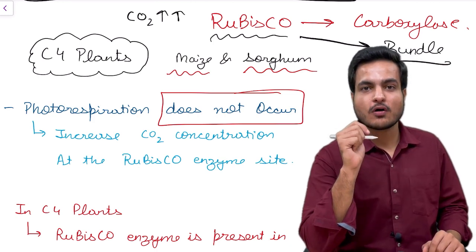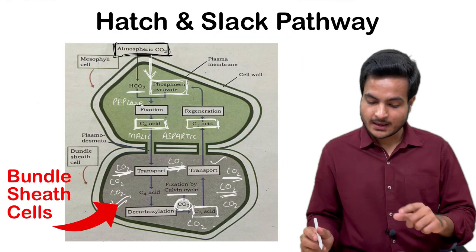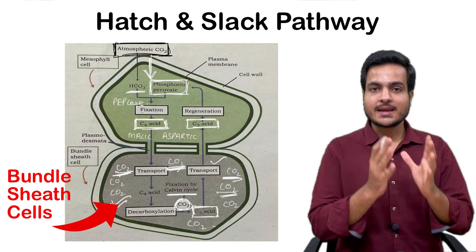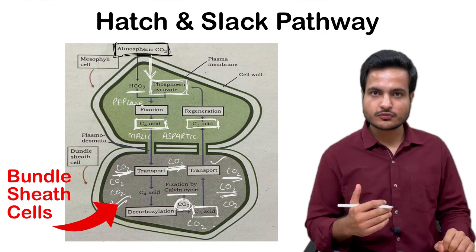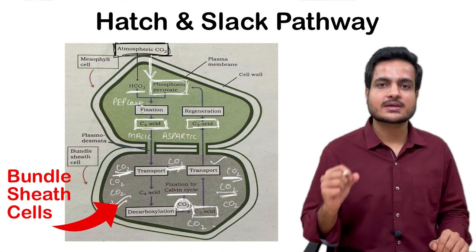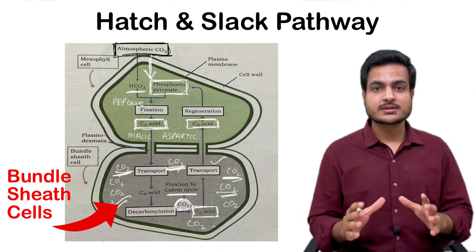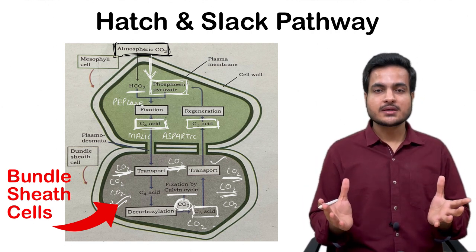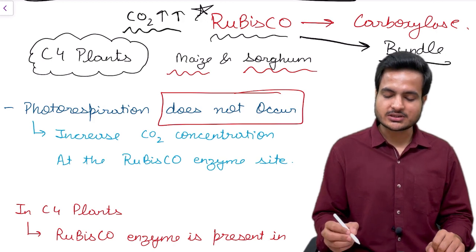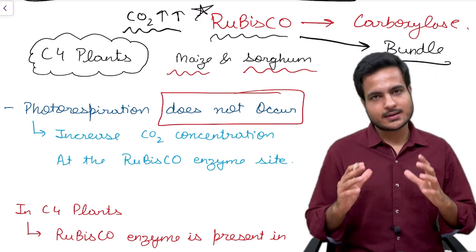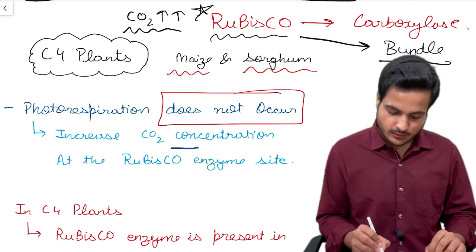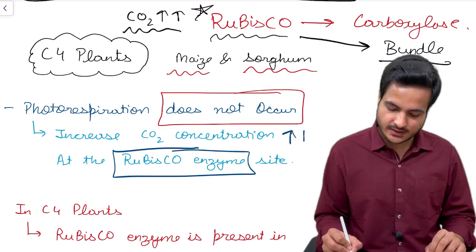In C4 plants, RuBisCO is present in bundle sheath cells. In the Hatch and Slack pathway, malic acid and aspartic acid — sent from the mesophyll cells — are broken down in bundle sheath cells through decarboxylation, and carbon dioxide is released there. This increases the CO2 concentration inside bundle sheath cells, which is exactly where RuBisCO is present, and ultimately RuBisCO is forced to behave like a carboxylase.